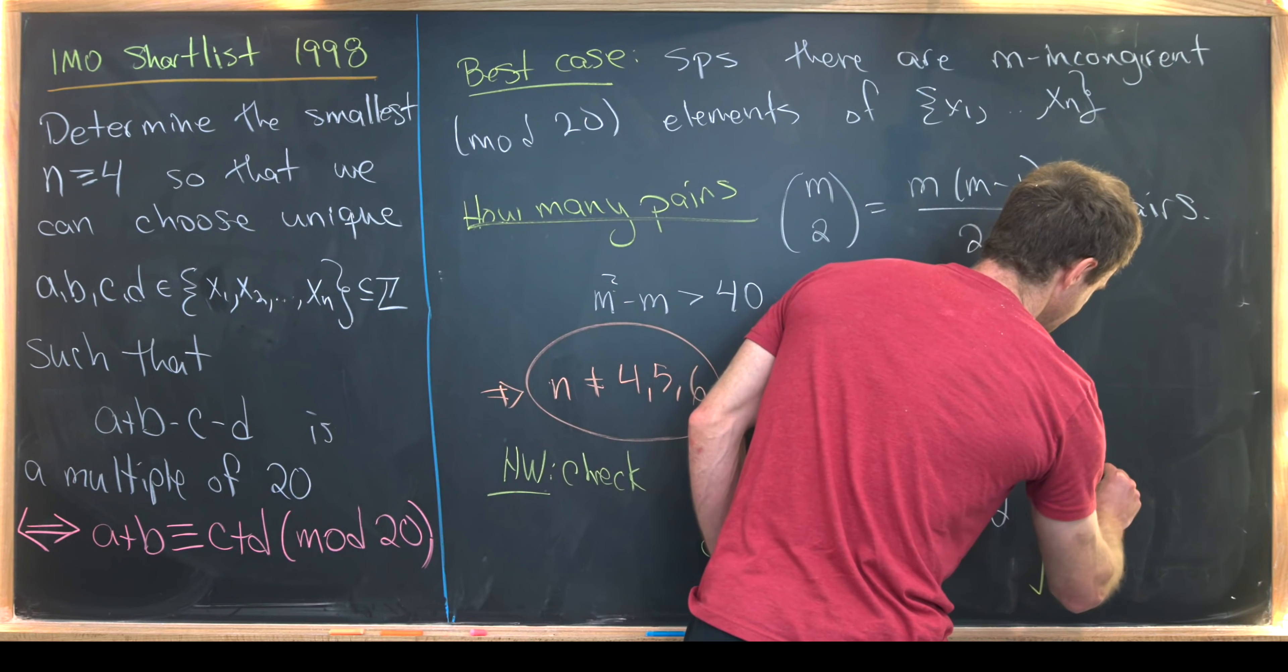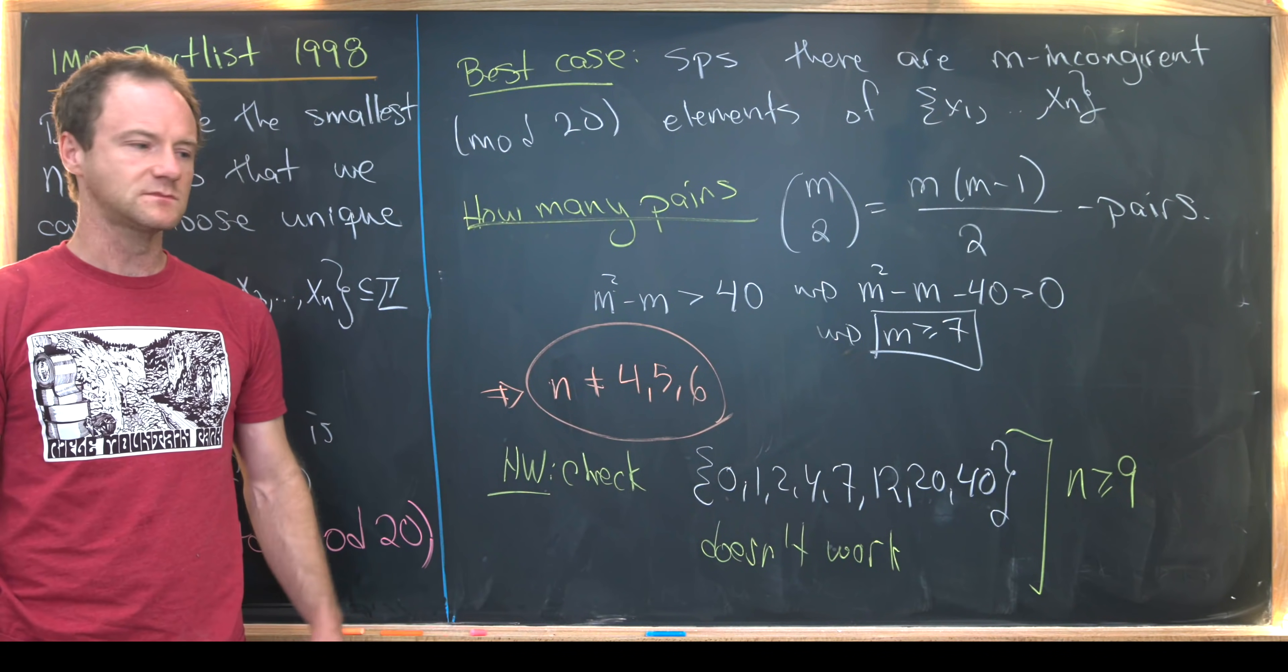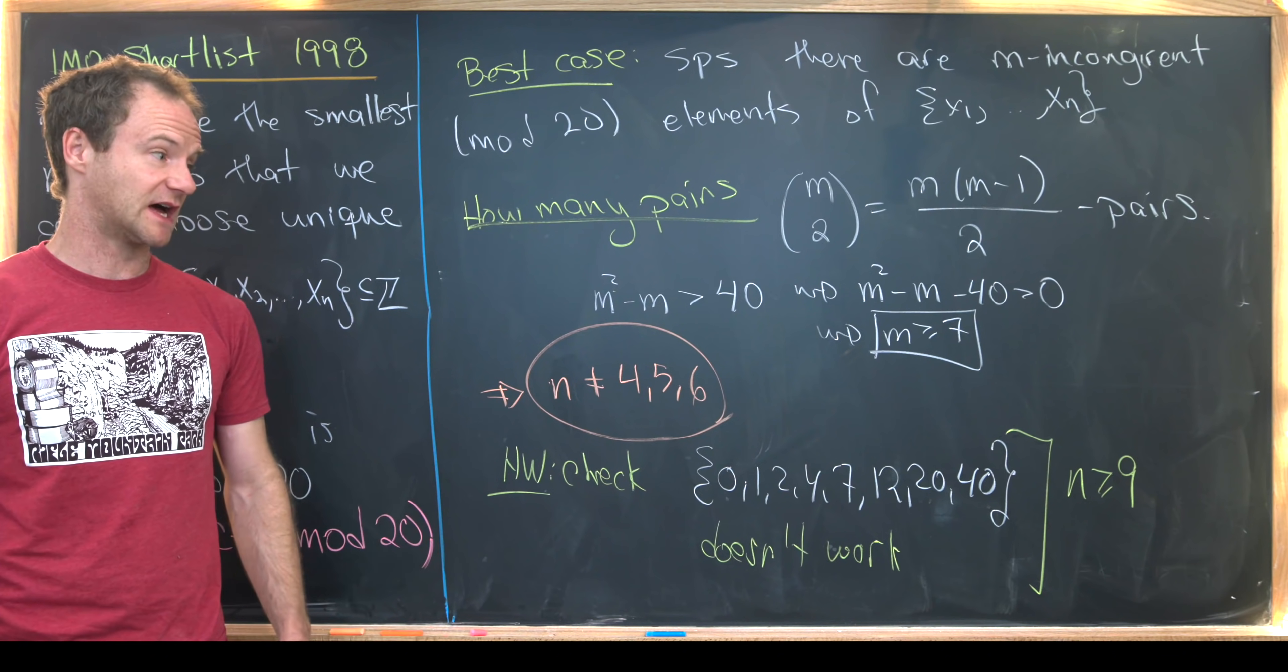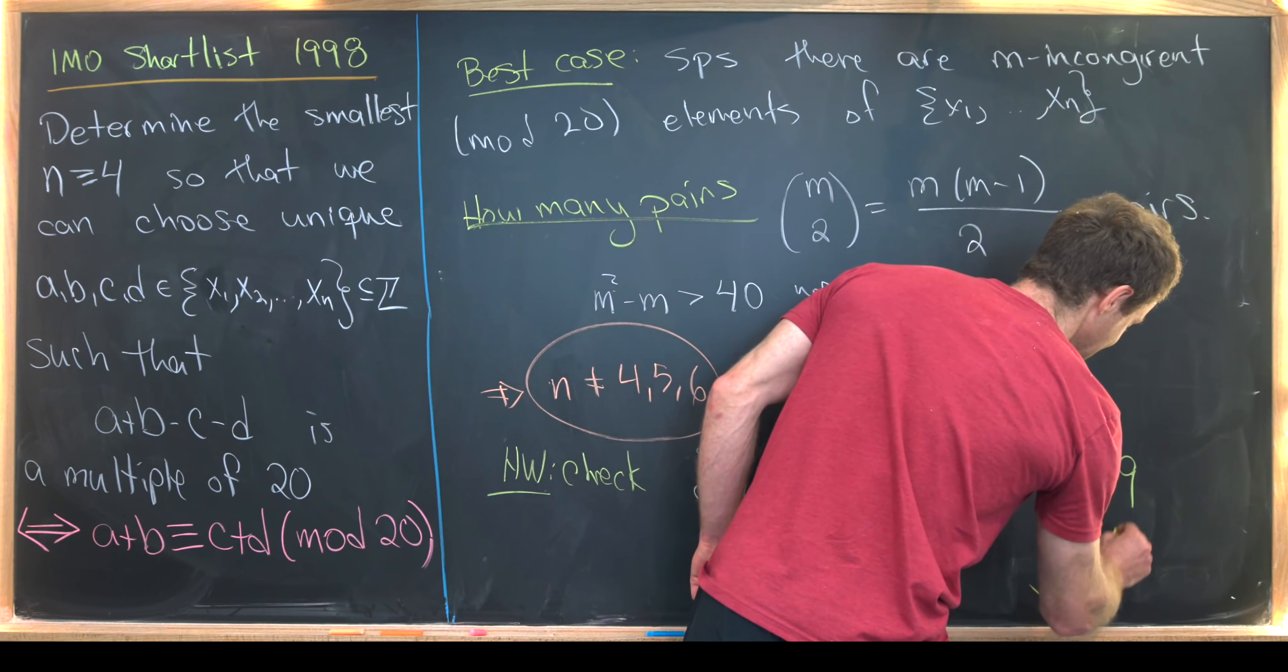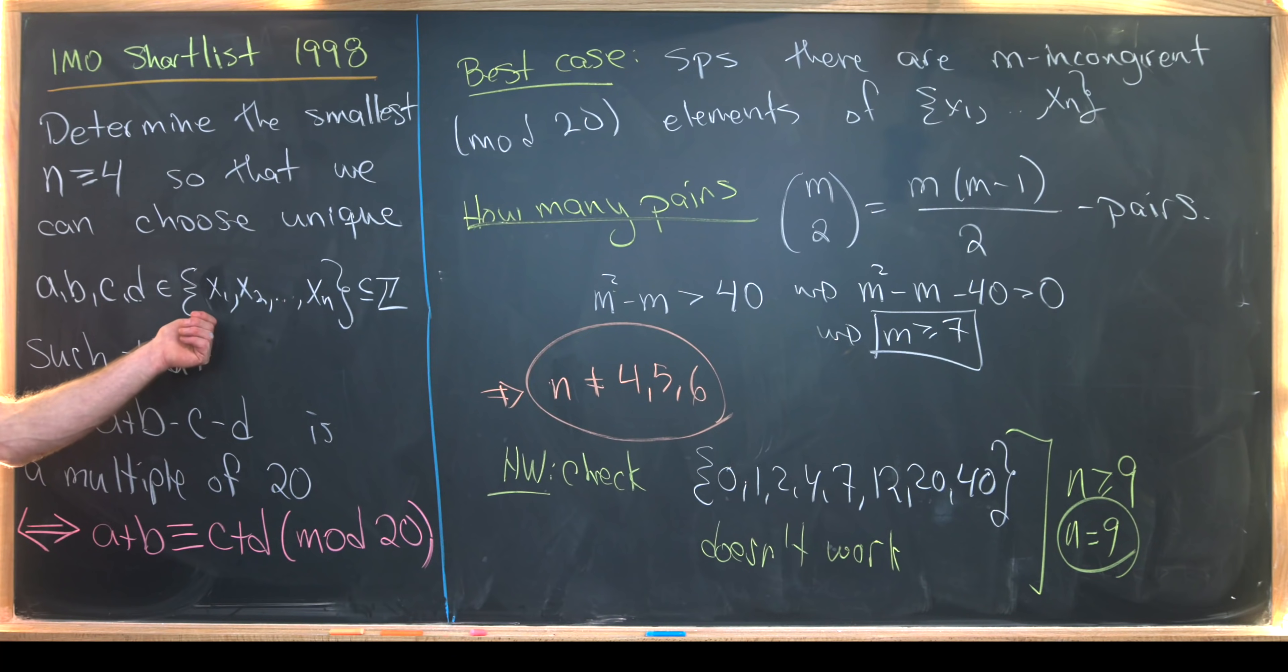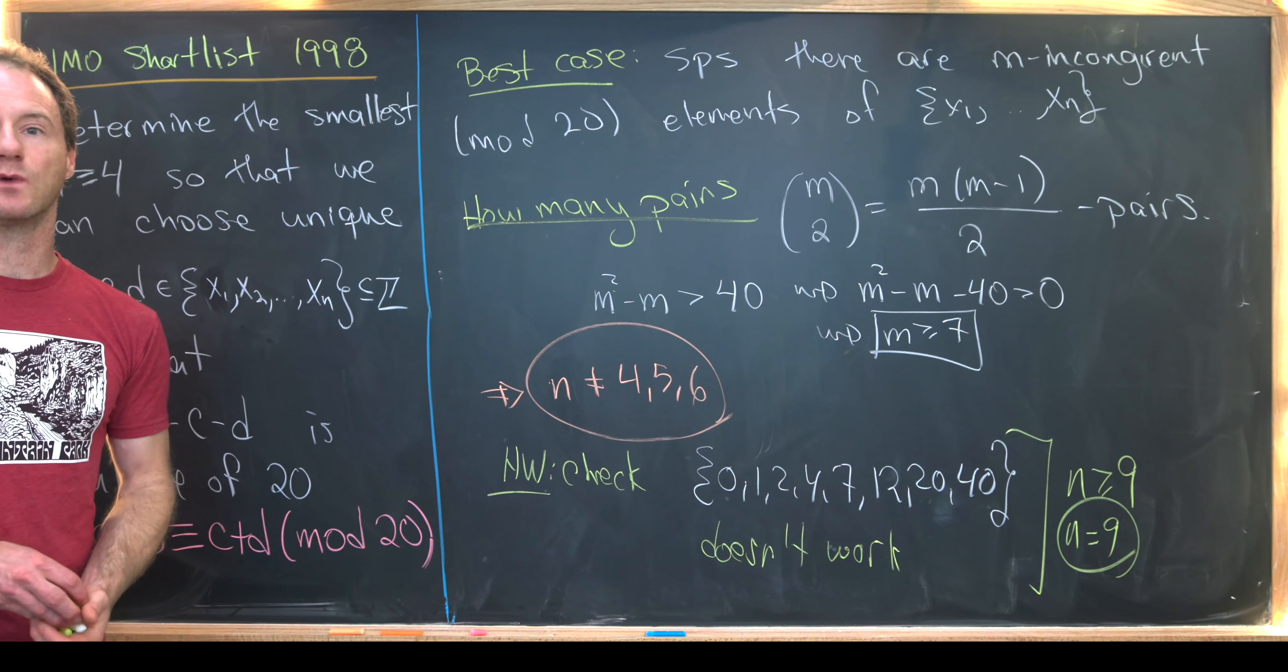So that tells us that n must be bigger than or equal to nine. But once you're getting to n equals nine, well, there's kind of a lot to work with. So that tells us that this probably is exactly n equals nine. That is, if we've got a nine element set or larger, then we're guaranteed to be able to find a quadruple satisfying this rule. So let's maybe go ahead and clean this up and that's exactly what we'll prove.